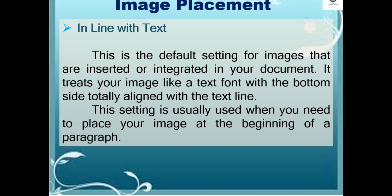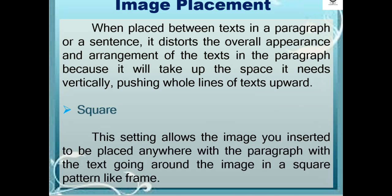Let's proceed to image placement. The first is inline with text — the default setting for images inserted in your document. It treats your image like a text font, with the bottom side totally aligned with the text line. This setting is usually used when you need to place your image at the beginning of a paragraph. When placed between text in a paragraph or sentence, it distorts the overall appearance and arrangement of the text because it takes up the vertical space it needs, pushing whole lines of text upward.